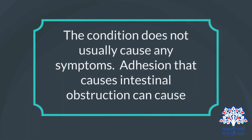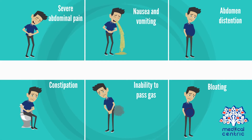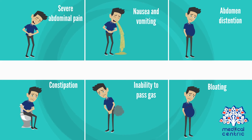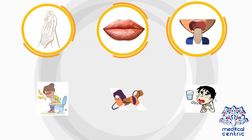Symptoms. The condition does not usually cause any symptoms. Adhesions that cause intestinal obstruction can cause severe abdominal pain, nausea and vomiting, abdominal distension or swelling of the abdomen, constipation, inability to pass gas, bloating, and loud bowel sounds.